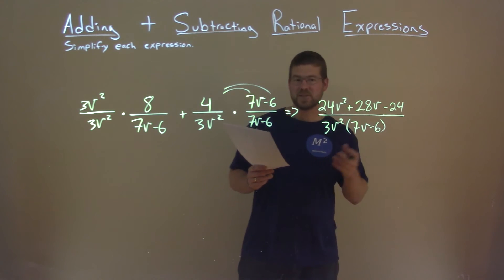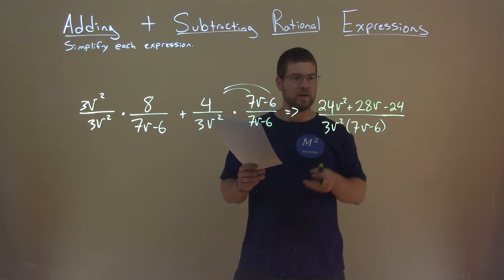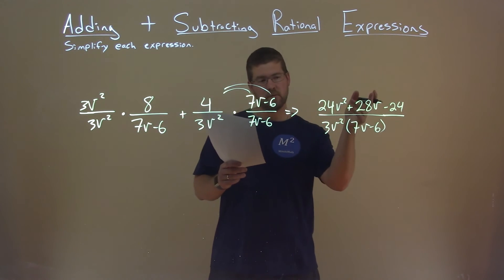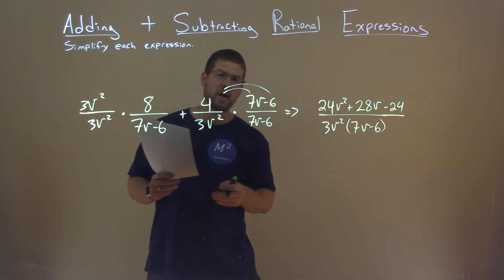And, well, we're actually done here. Final answer is 24v squared plus 28v minus 24 divided by 3v squared times 7v minus 6.